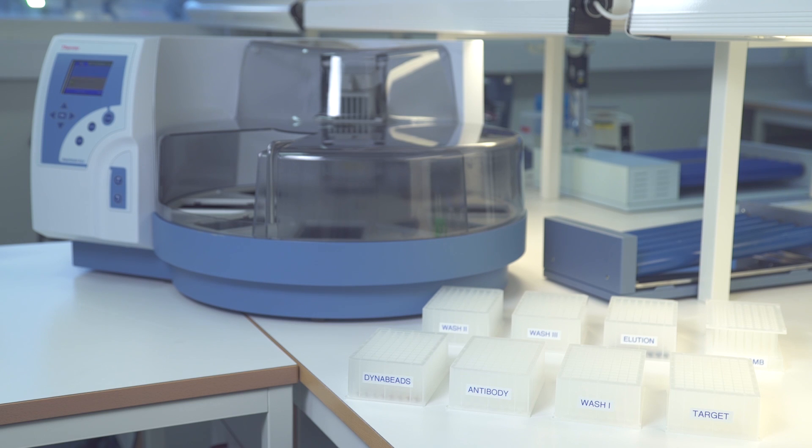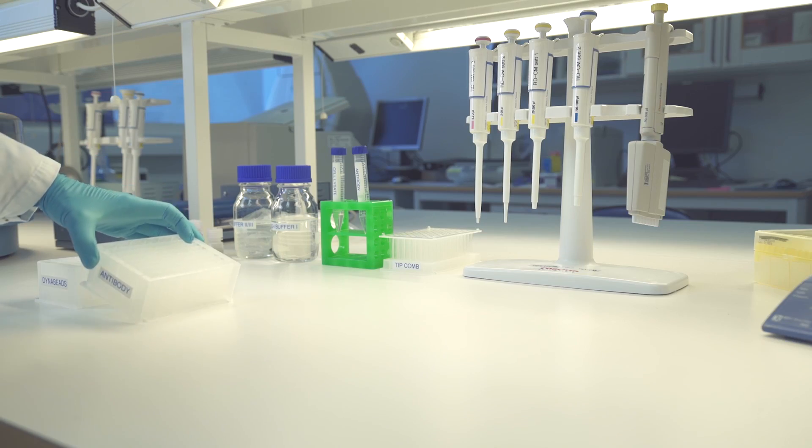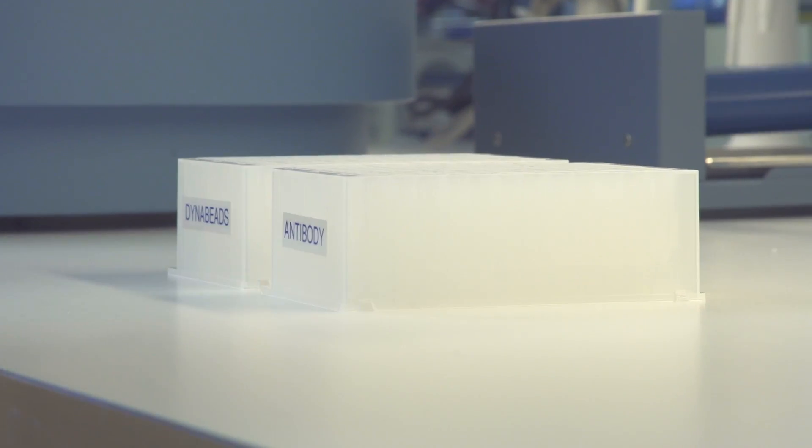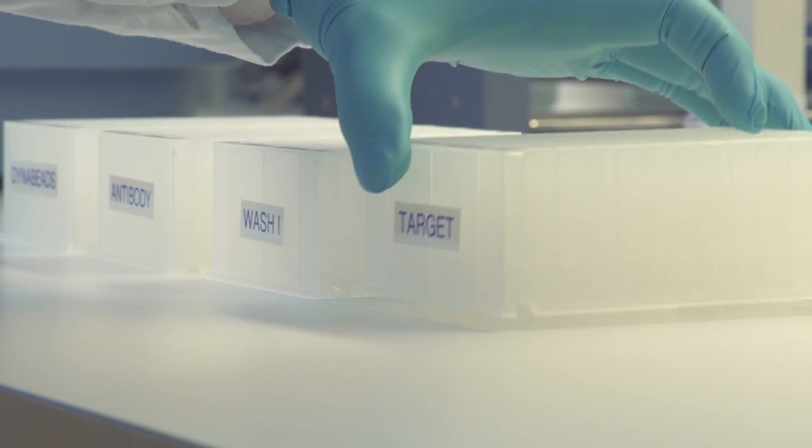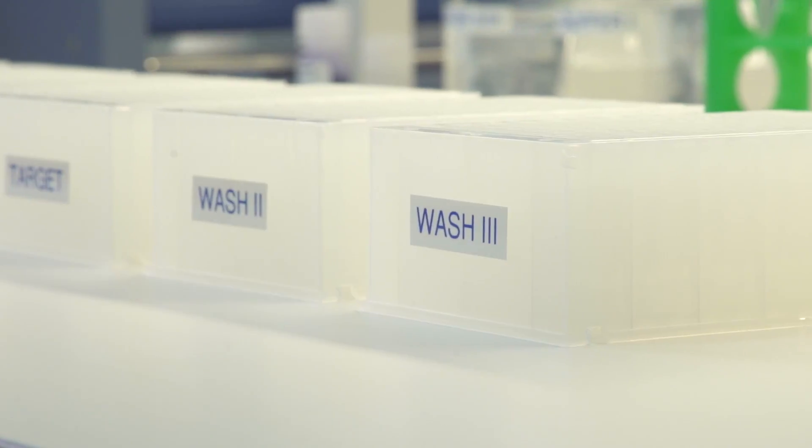The protocol consists of seven processing steps, where each step is defined by one plate in the Kingfisher instrument. The initial step is to prepare seven plates containing DynaBeads, antibodies for target capture, washing buffer, sample, washing buffers, and elution buffer.